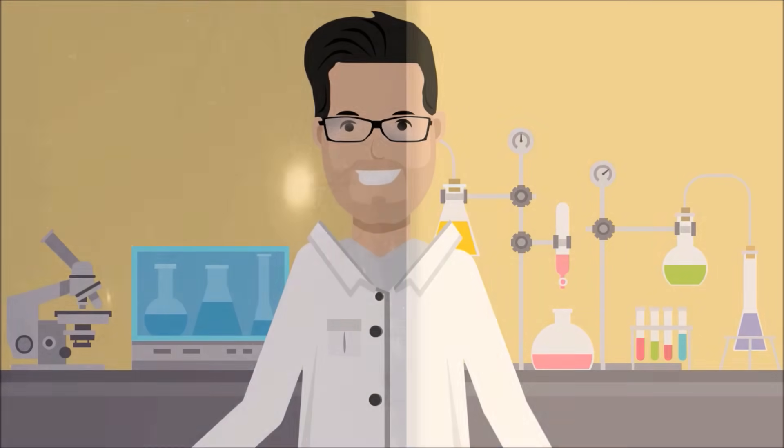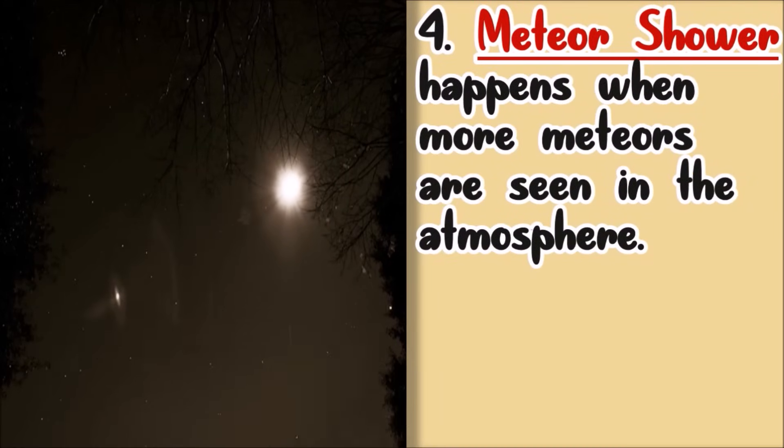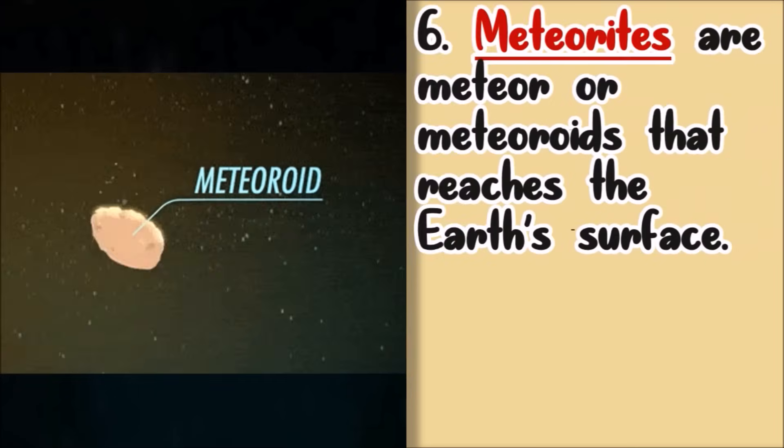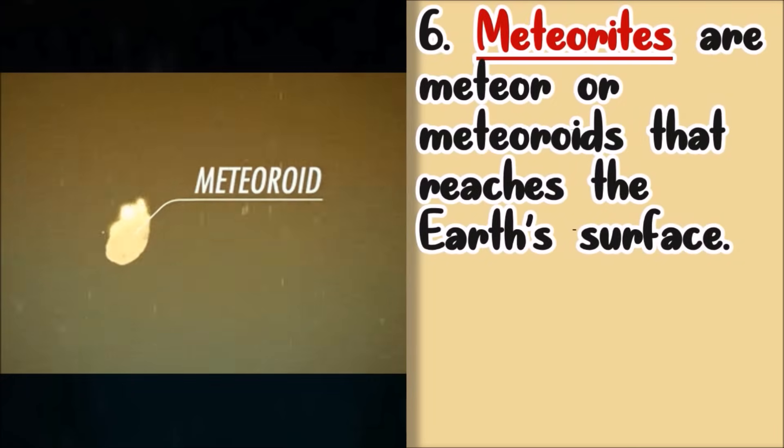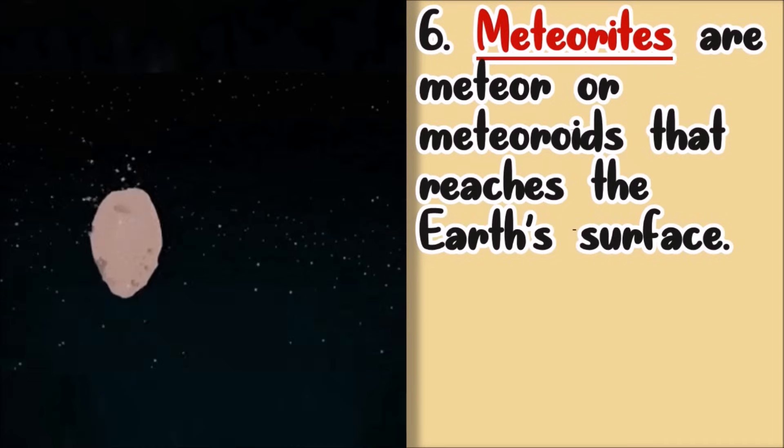On the other hand, when more meteors are seen in the atmosphere, it is called meteor shower. But if the meteor reaches the Earth's surface, on land or on water, it is now called meteorites.